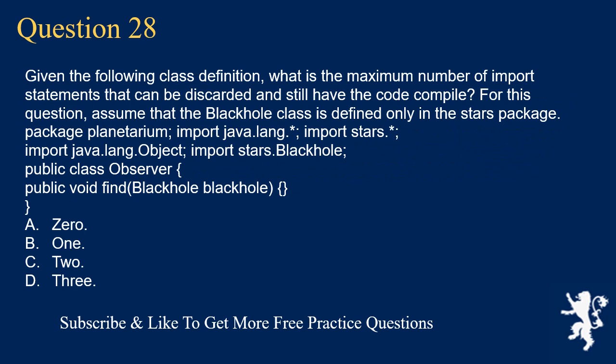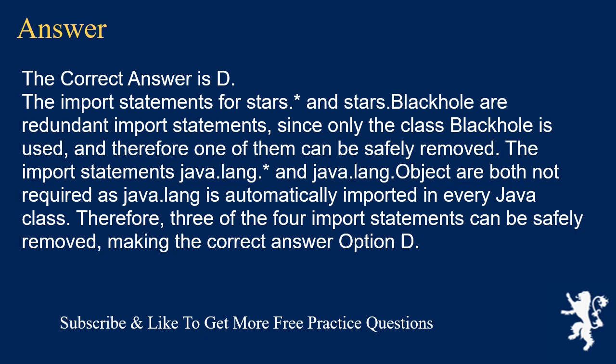Question 28: Given the following class definition, what is the maximum number of import statements that can be discarded and still have the code compile? Assume the BlackHole class is defined only in the stars package. Package planetarium, import java.lang.*, import stars.*, import java.lang.Object, import stars.BlackHole. Public class Observer, public void findBlackHole(BlackHole bh). Options: A) 0, B) 1, C) 2, D) 3. The correct answer is D. The imports for stars.* and stars.BlackHole are redundant — only one is needed. The imports java.lang.* and java.lang.Object are both unnecessary as java.lang is automatically imported. Therefore three of the four import statements can be safely removed.